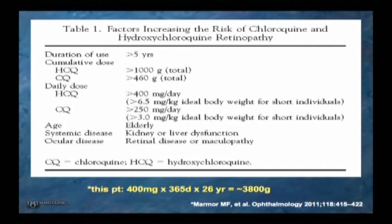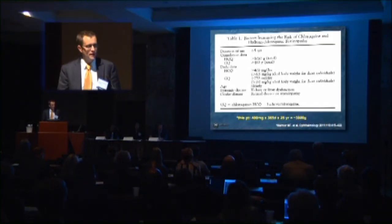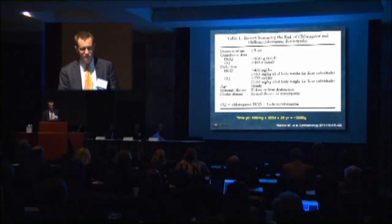Based on preceding studies, an accumulated dose of 1,000 grams for hydroxychloroquine was identified as the range above which toxicity really starts to appear. Daily dose over 400 mg — 400 being standard — is a risk factor. Importantly, for short individuals, 400 mg may be a bit higher relative to body weight, placing them at higher risk. Dosing ideally is based on ideal body weight, so someone under five feet, regardless of actual weight, would need to be dosed down. This medication is not distributed in fatty tissues. Elderly patients and those with renal or liver dysfunction or macular disease may also be at higher risk. The patient just shown had a total cumulative dose of 3,800 grams.